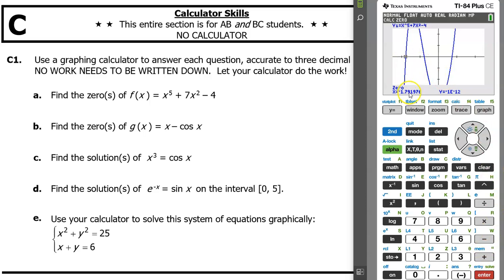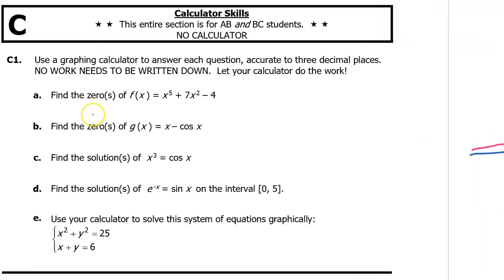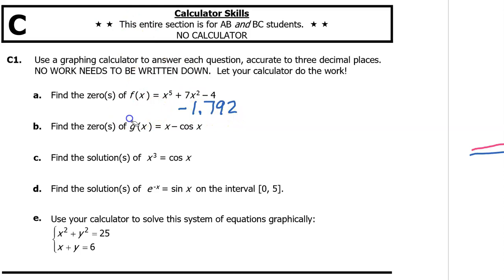So this is the zero: negative 1.792. In AP Calculus your decimals will have to be accurate to three decimal places, so they will either accept negative 1.791 or negative 1.792 — if you rounded properly either of those would be just as good. I'm going to go ahead and keep the rounded version.